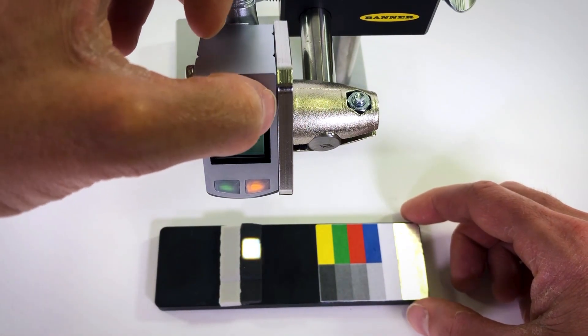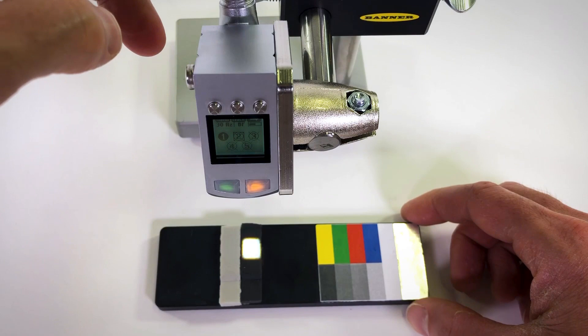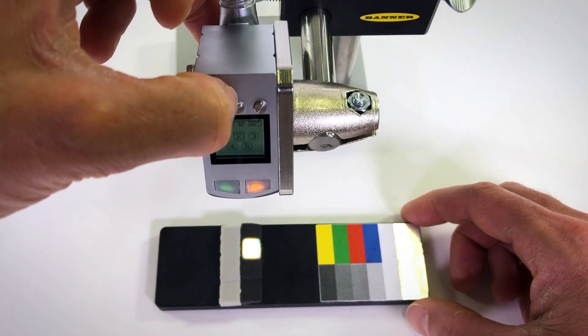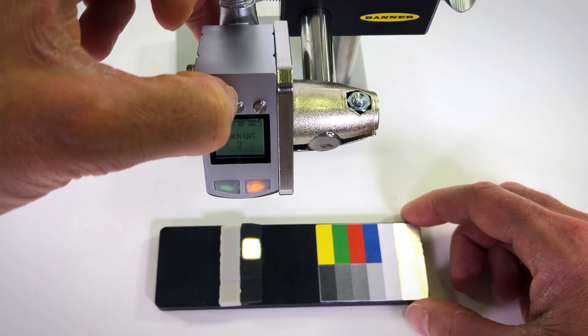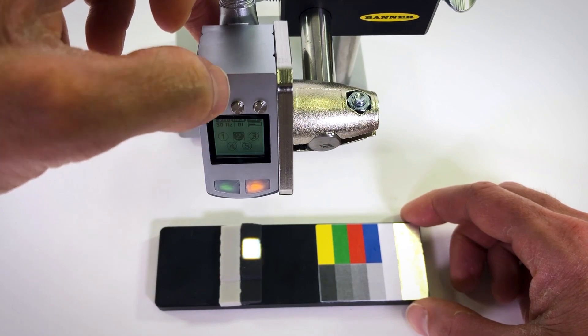To teach the second target, I press the right button which moves the teach function to the second output. The output that is being taught will have a square box around it on the LCD screen. Now with this target under the sensor, I press and hold the teach for three seconds again, looking for confirmation flashes from the sensor's LEDs.